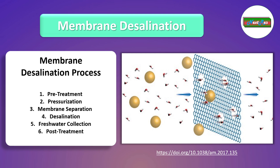Membrane separation: the pressurized saline water is introduced to the RO membrane, which is a semi-permeable barrier with very tiny pores. These pores allow only water molecules to pass through while blocking larger dissolved salts, ions and impurities.